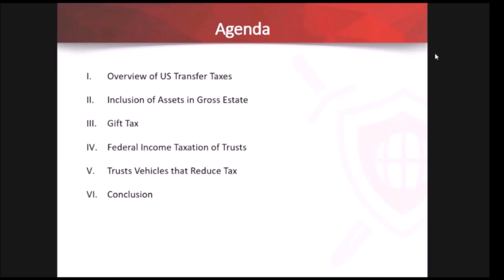Today we're going to go through some broad overviews of the current tax regime in the United States as it relates to both income and transfer taxes for trusts — how they work, how they operate, and techniques to utilize tax reduction. As a broad overview, at the federal level we have two types of taxes for trusts: income and transfer. Income taxes are under Subtitle A of the Internal Revenue Code of 1986 as amended. Subtitle B covers U.S. transfer taxes, which include the estate, gift, and generation-skipping transfer tax.